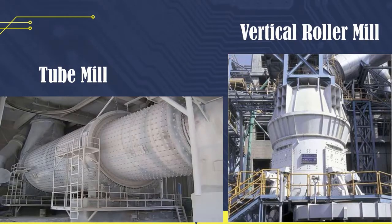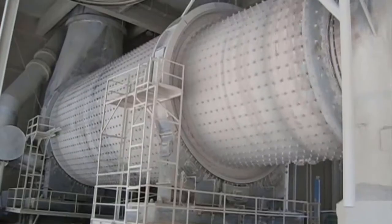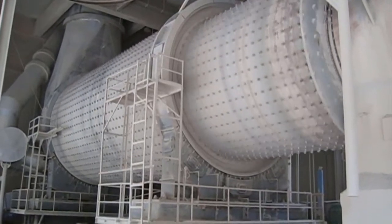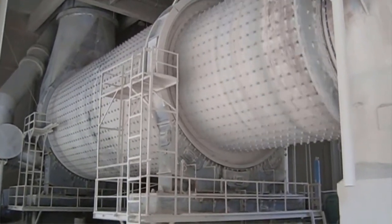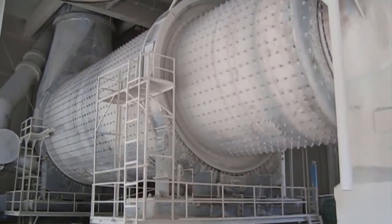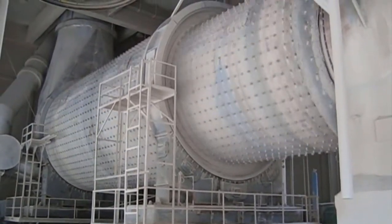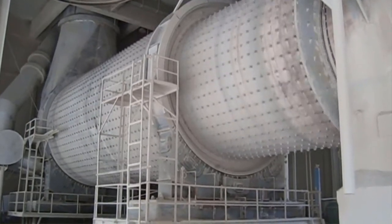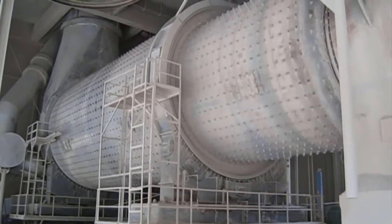The main equipment used in the raw material milling process is of two types, including the tube mill and the vertical roller mill. The tube mill, or horizontal mill, is a steel cylinder which inside is lined with a liner and filled with steel balls as a grinding medium.